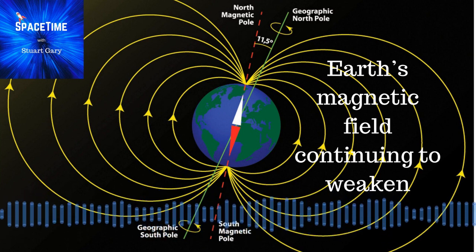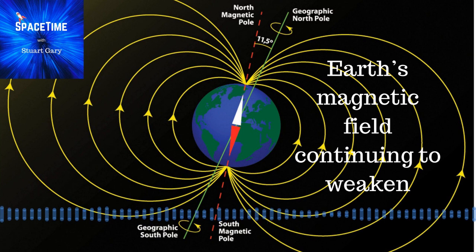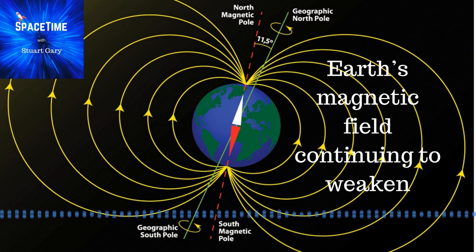A new study shows Earth's magnetic field is continuing to weaken around the South Atlantic Anomaly, an area stretching from Africa to South America which some scientists have speculated could signify the start of a flip in Earth's magnetic polarity.